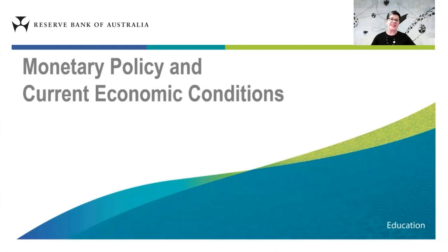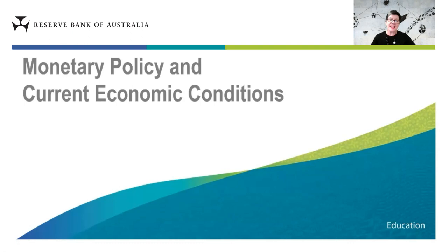Welcome everyone to the RBA's economic update webinar for Year 12 students. My name is Jackie Dwyer and I head the public education program at the RBA. I'll be your host for the webinar this afternoon. The main presentation today will be given by one of our economists, John Bolter, who will provide an overview of monetary policy and a summary of current economic conditions.